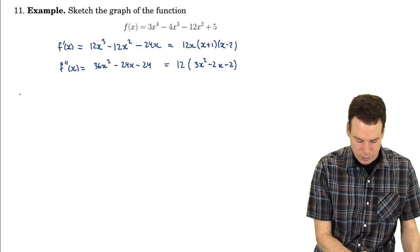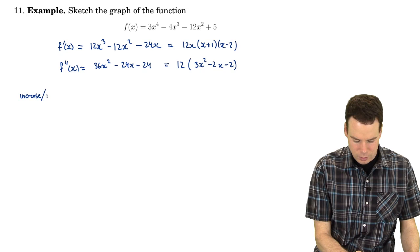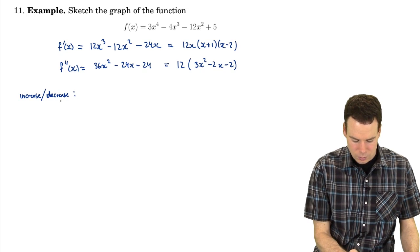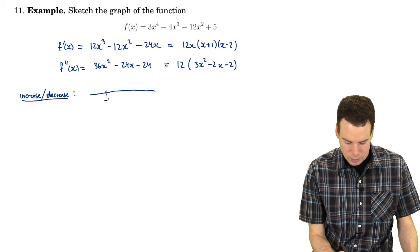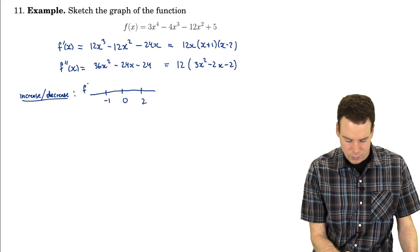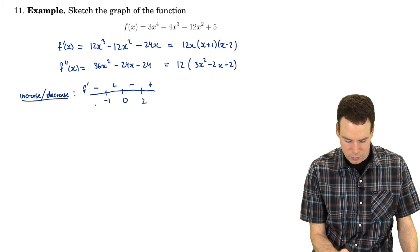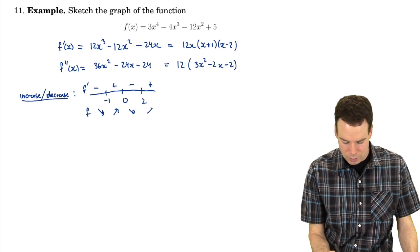Let's look at the intervals of increase and decrease. We've already done this, so I'm just quickly jotting this down. At -1, 0, 2, we had that the sign of the derivative was negative, positive, negative, positive. So f was decreasing, increasing, decreasing, increasing.